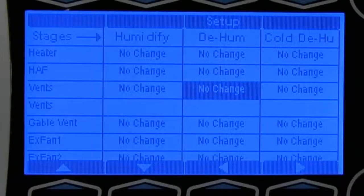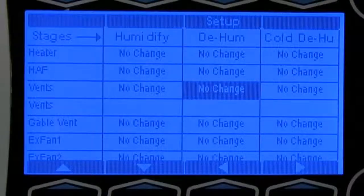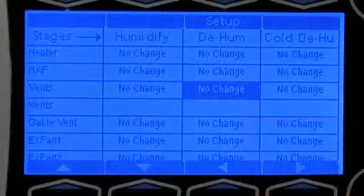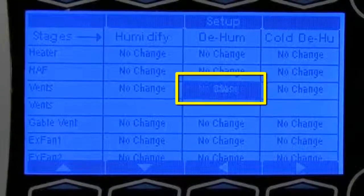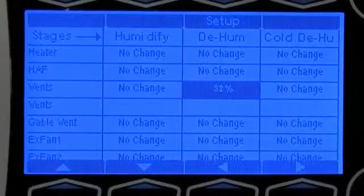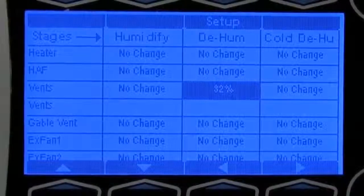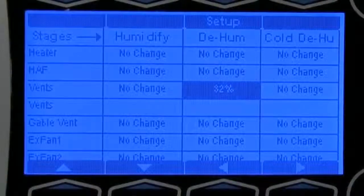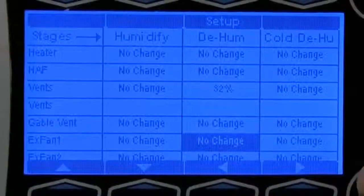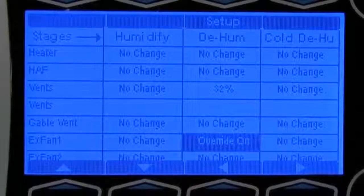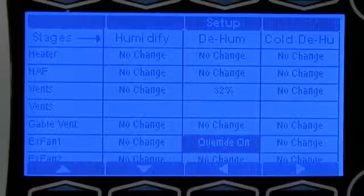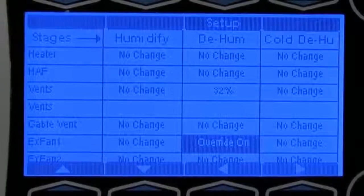Now when it comes to humidity staging, you can always program your vents and your fans to open and come on to assist in dehumidification. For instance, instead of having no change for vents in dehum, you can have your vents open at a certain percentage to assist in dehumidification. As well as exhaust vents. You can have these devices override to on when the humidity arrives above the humidity set point.